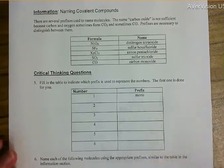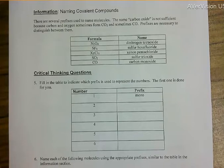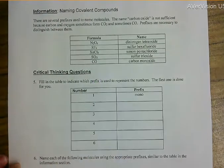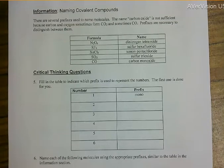Naming covalent compounds: there are several prefixes used to name molecules. The name 'carbon oxide' is not sufficient because carbon and oxygen sometimes form CO2 and sometimes CO — prefixes are necessary to distinguish between them. For example: N2O4 is dinitrogen tetraoxide, SF6 is sulfur hexafluoride, XeCl5 is xenon pentachloride, SO3 is sulfur trioxide, and CO is carbon monoxide.